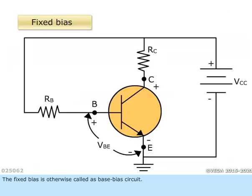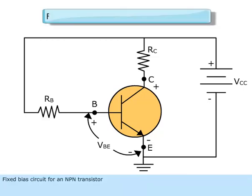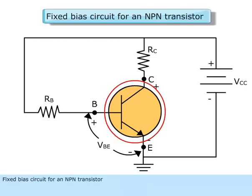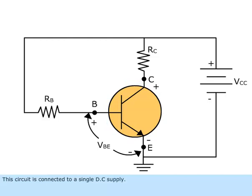The fixed bias is otherwise called the base bias circuit. Fixed bias circuit for an NPN transistor. This circuit is connected to a single DC supply.